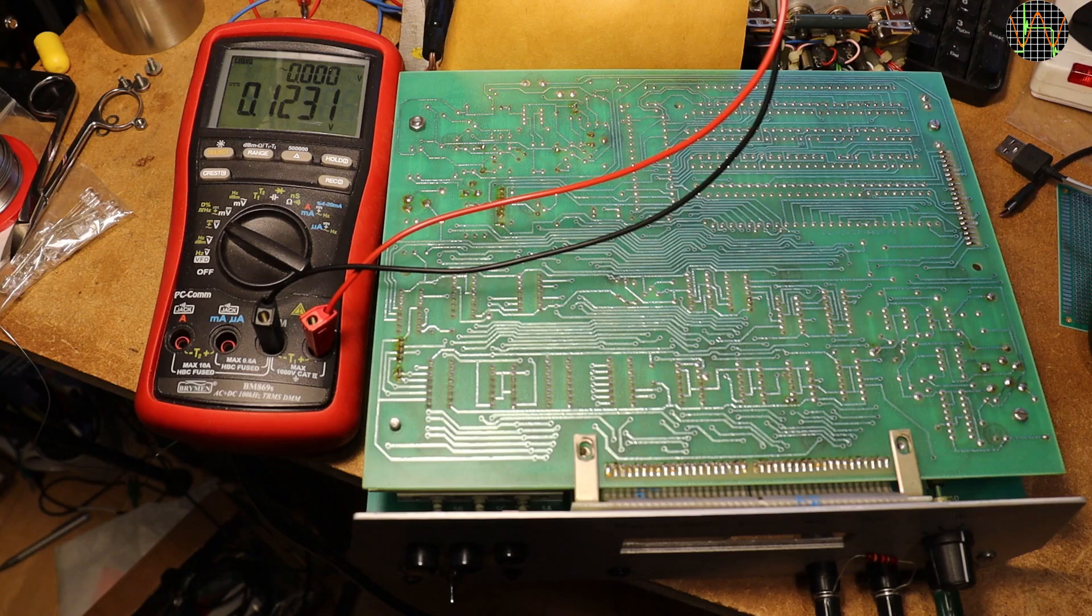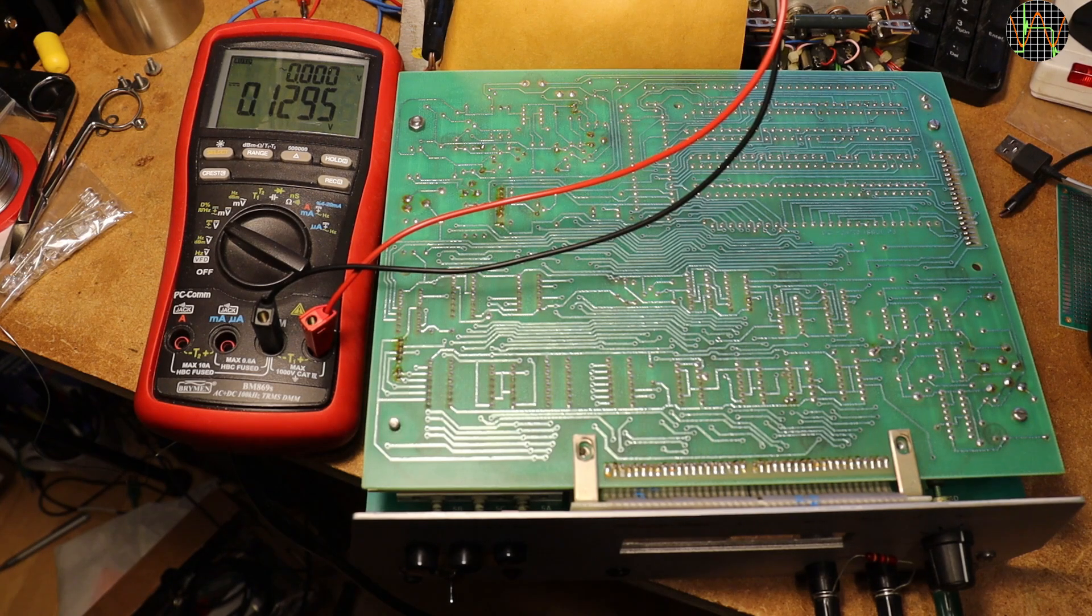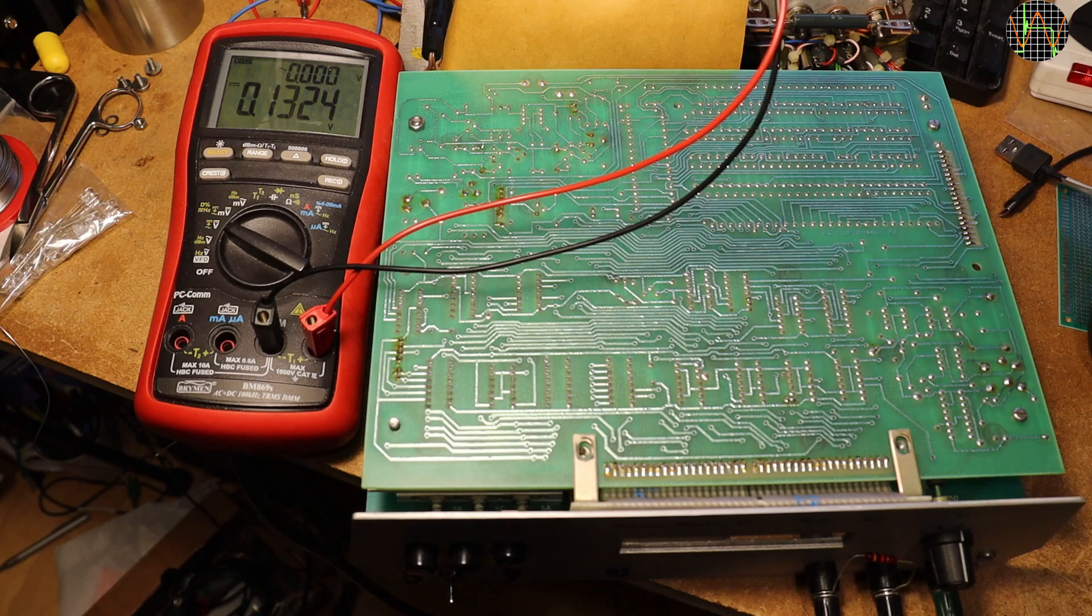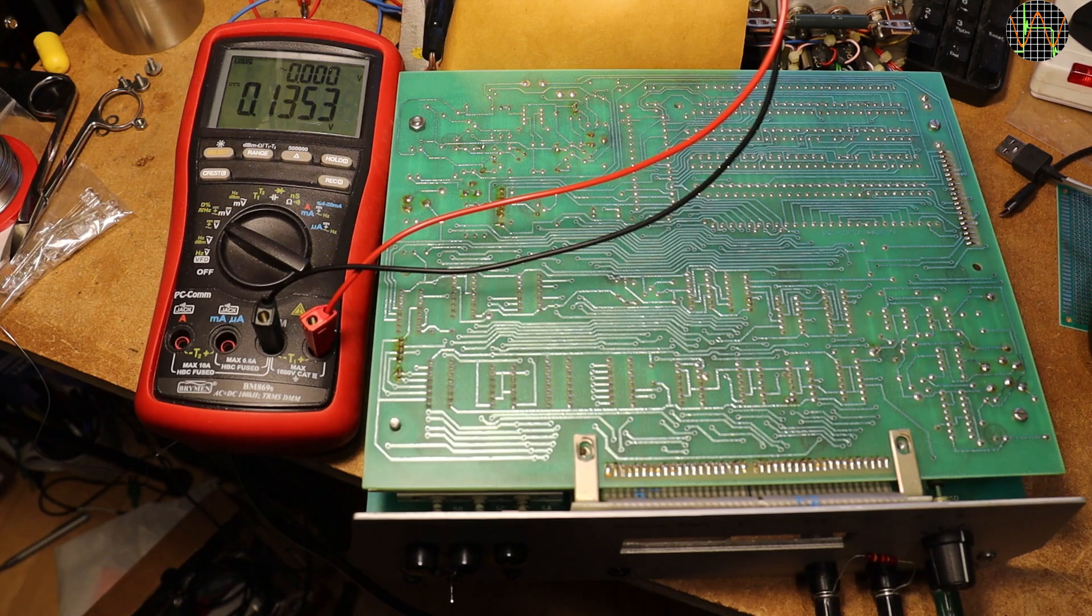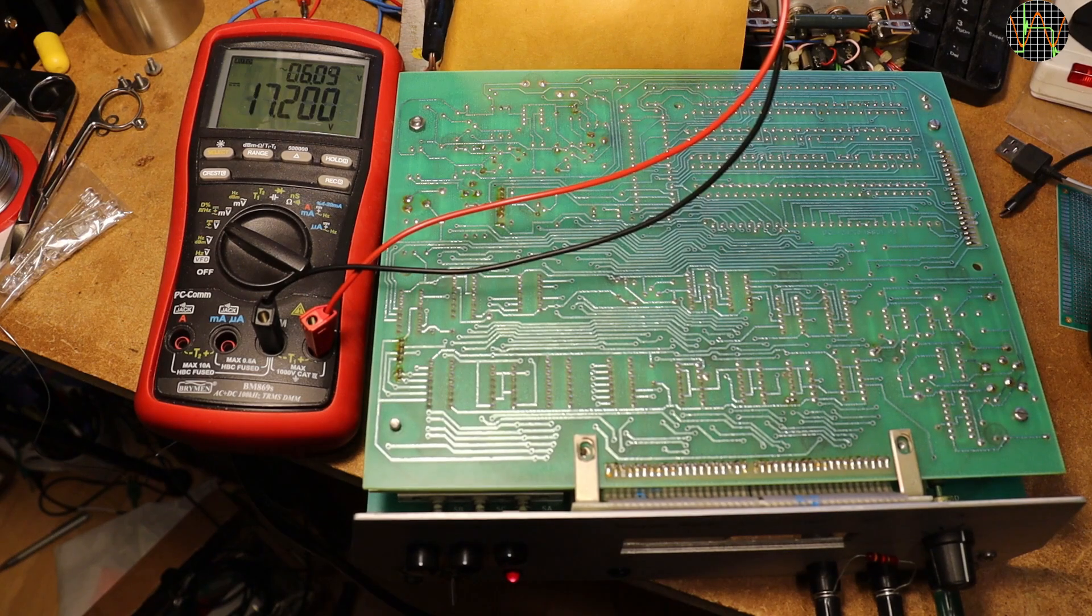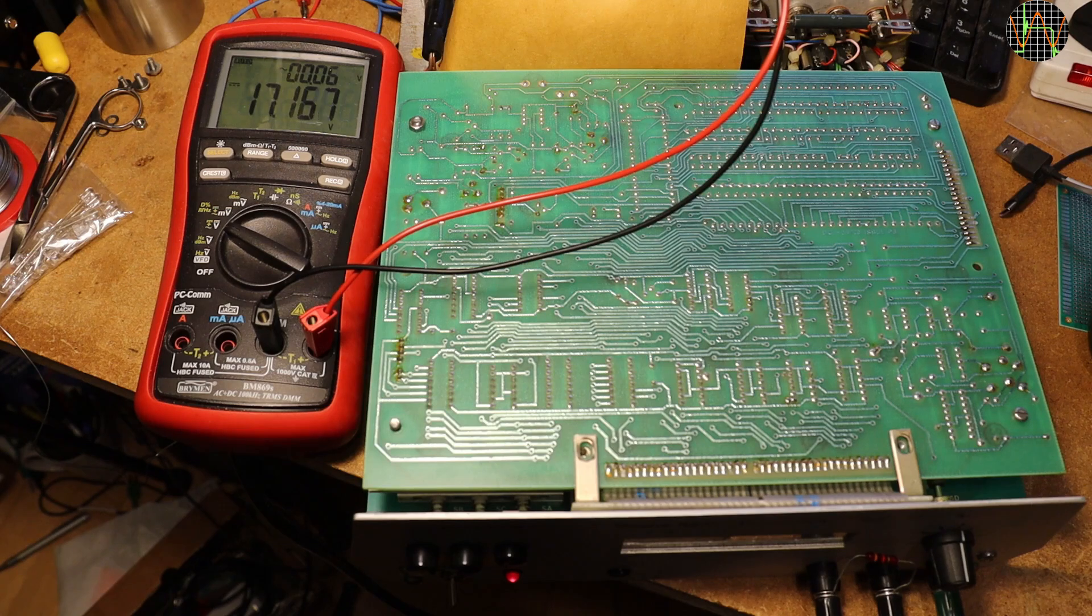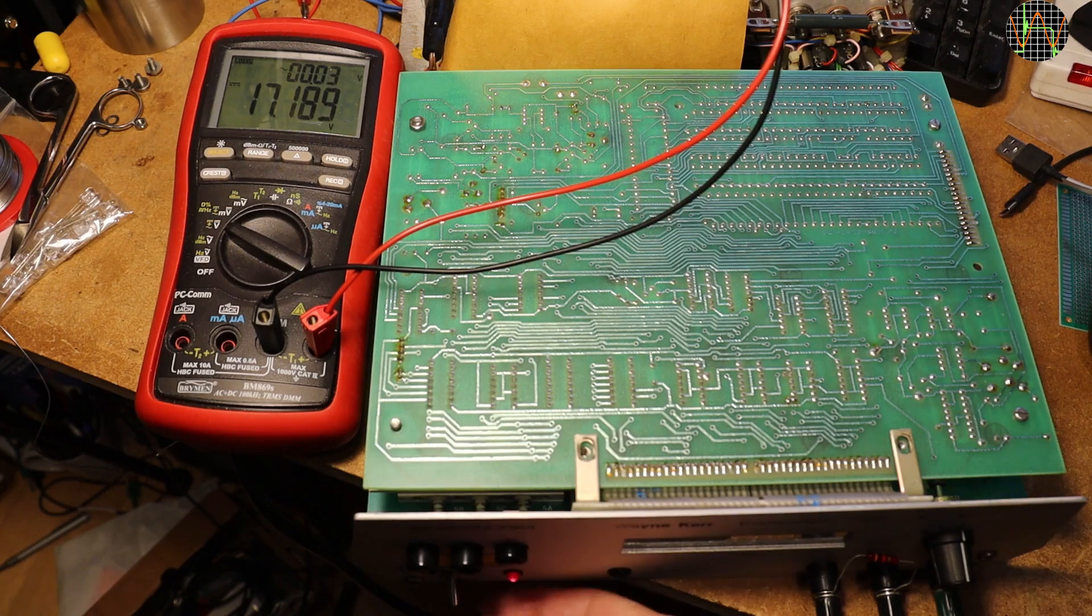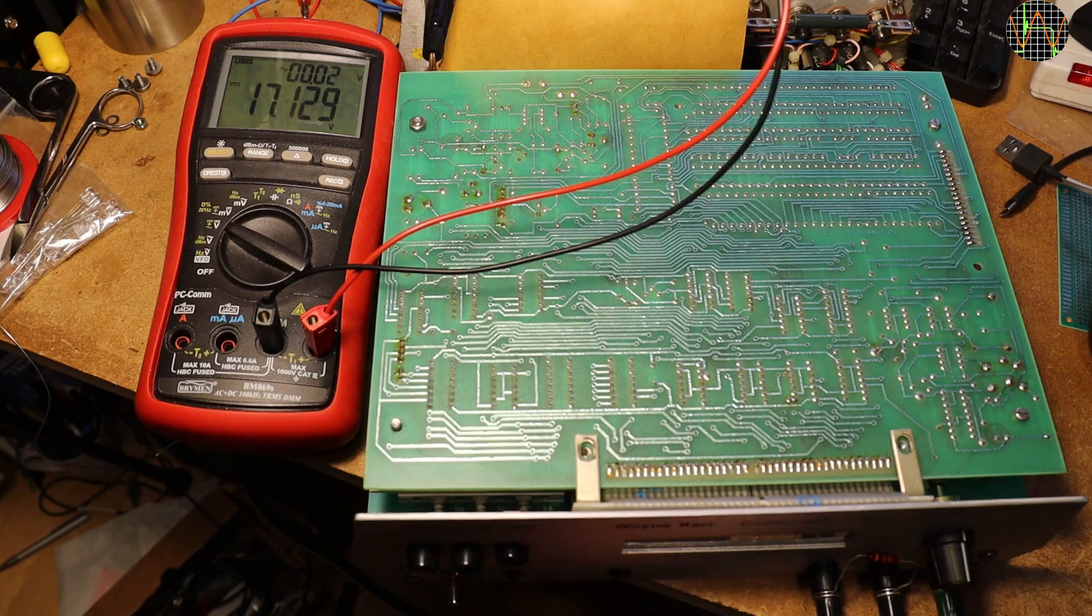I connected the multimeter across the smoothing cap. Let's see if everything works as it should. Mains is connected and no voltage on the cap, good. Now turning the front switch on and the red LED lights and there is a slightly above 17V on the capacitor. That works as it should.